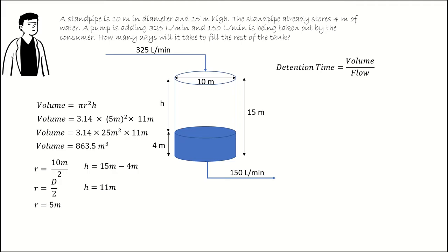The flow of our tank isn't simply the flow entering the tank. Recall there's customers taking 150 liters per minute. So the flow that's contributing to filling the tank is the difference. Flow is 325 liters per minute minus 150 liters per minute. The flow is equal to 175 liters per minute.